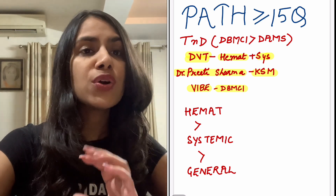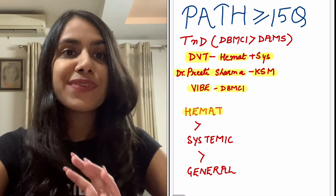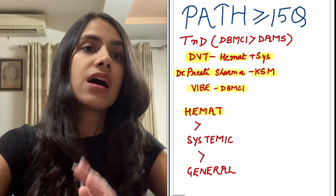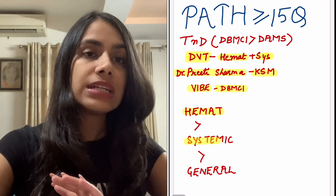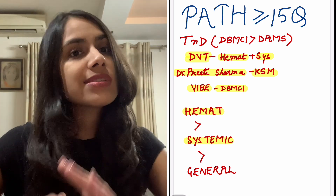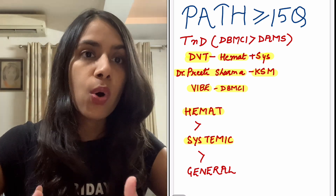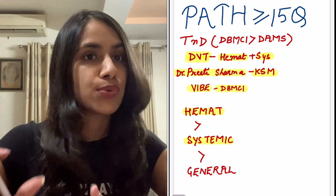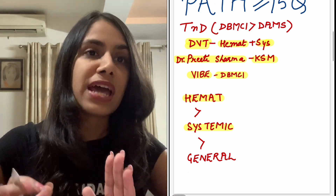Coming to the weightage aspect: hemat is very very important — anything can come from hemat. Followed by systemic path, which is also heavily tested. And lastly, general path. Questions do come from general, but usually everyone's general is a little stronger because in UG days we spent maximum time doing general path, so those questions are more or less manageable.